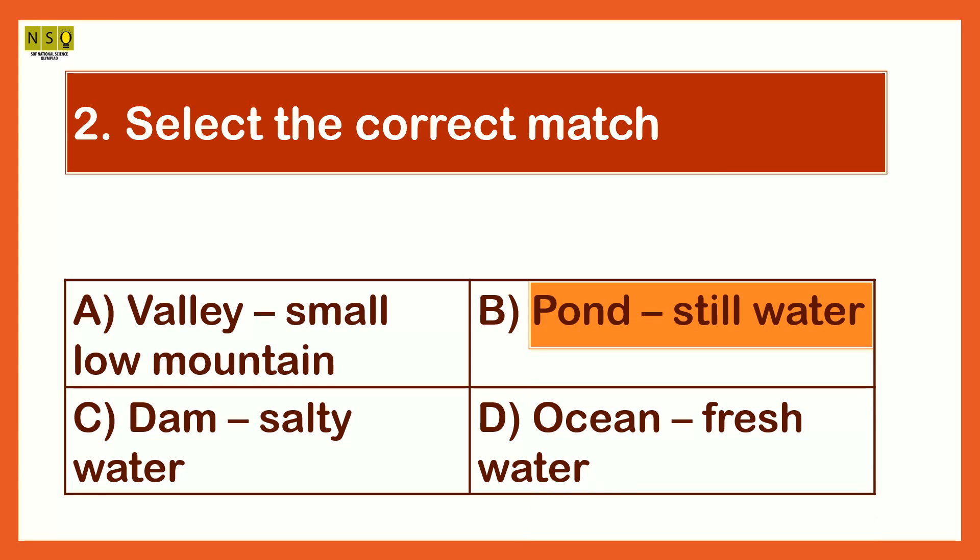Water in the pond is not flowing. It is still water. A valley is a low land between two mountains. Dam has fresh water, ocean has salty water. So, therefore, the correct match is Pond, still water.